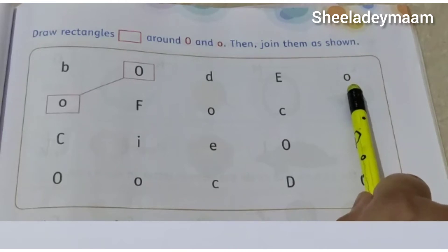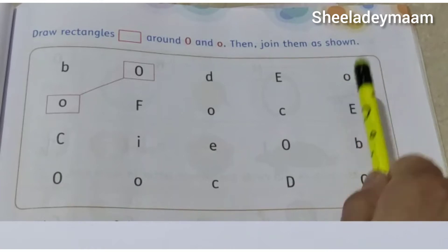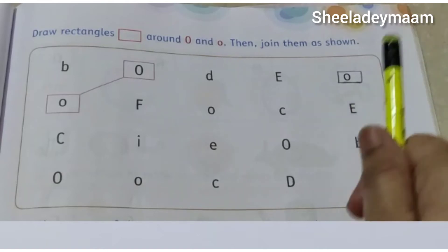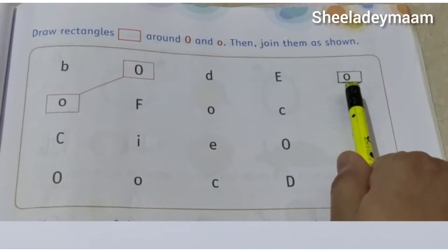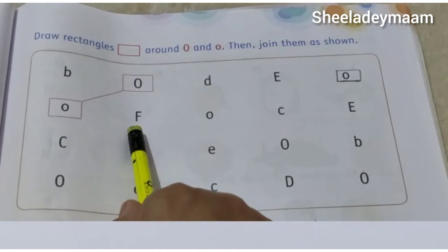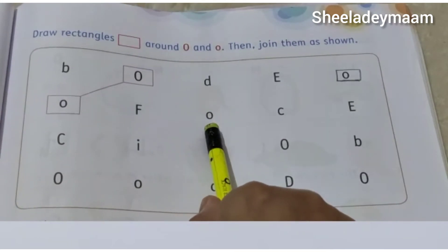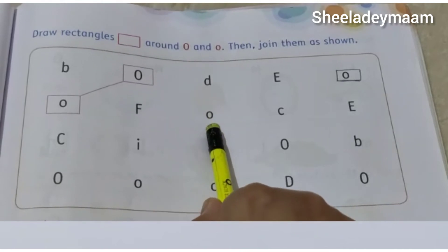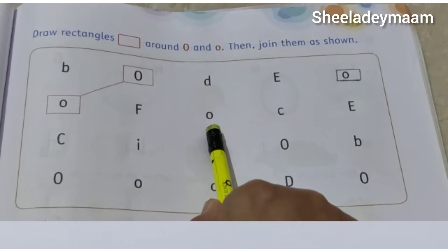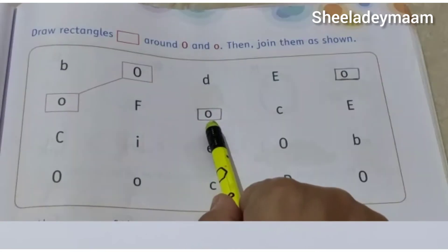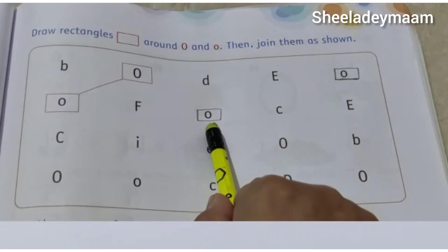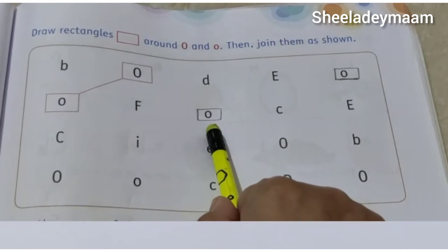Now let's make a red triangle around the letter O. This is letter O, this is lowercase o. And our next letter is — tell me, children, which letter is this? This is letter F, this is capital letter F. Now tell me, which letter is this? Yes, you are correct. This is letter O, this is lowercase o. Now let's make a red triangle around the letter O. So children, this is letter O — lowercase o — and this is also letter O. Now let's join them with the help of a slanting line.